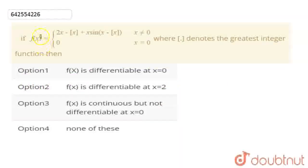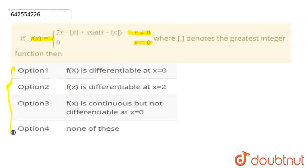Hello students. In this question we have given a function when x not equal to 0, and when x equal to 0. We need to check which of the following options is correct, specifically at x equal to 0 and at x equal to 2.